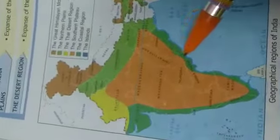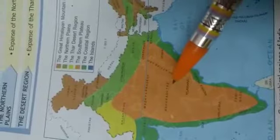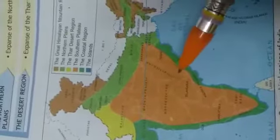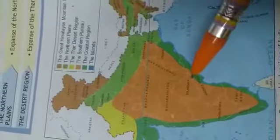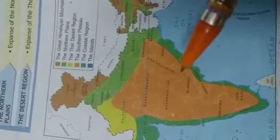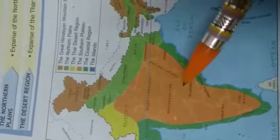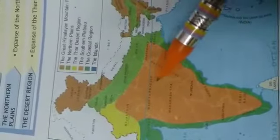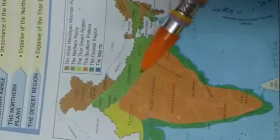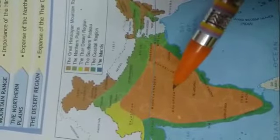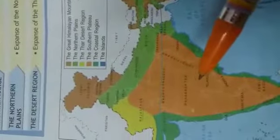Children, you all have to study this map of the physical features. Do practice at home with a map. If you have a map at home from class 4, maps must be there. You can do practice by filling in the main five physical features of India using crayons and colors, and this can be shown when we meet in class.